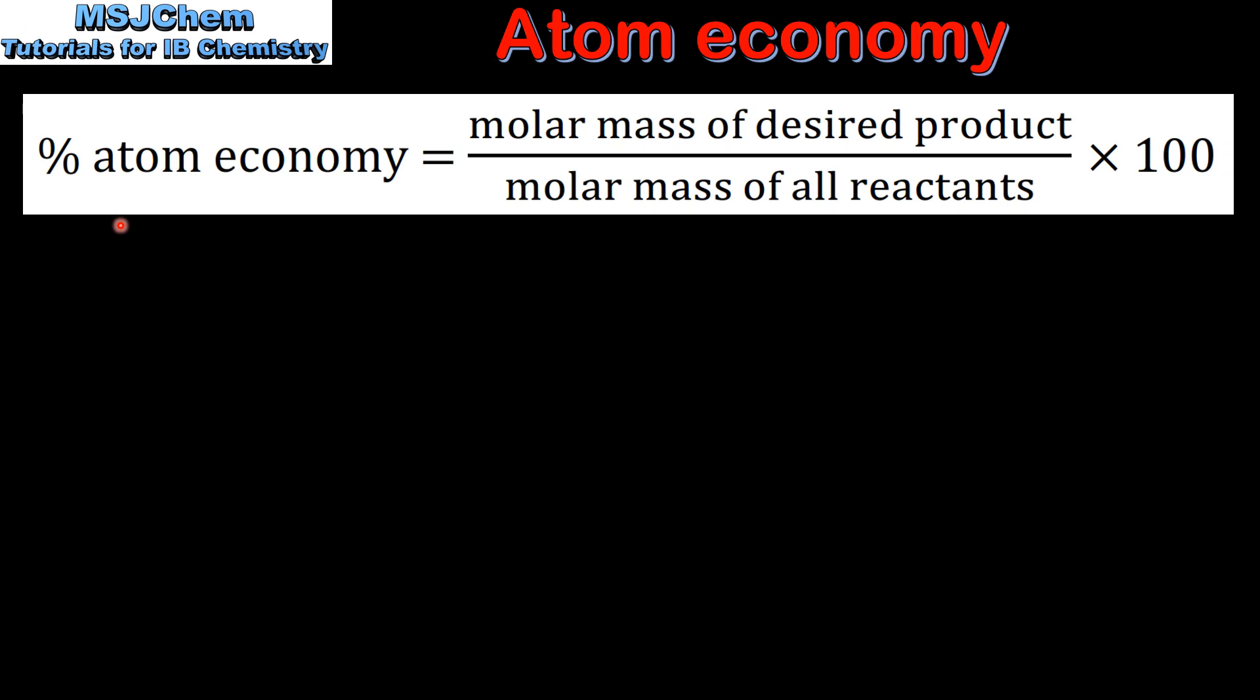Here we have the equation for calculating percentage atom economy that appears in the IB data booklet. Percentage atom economy equals the molar mass of the desired product divided by the molar mass of all reactants multiplied by 100.